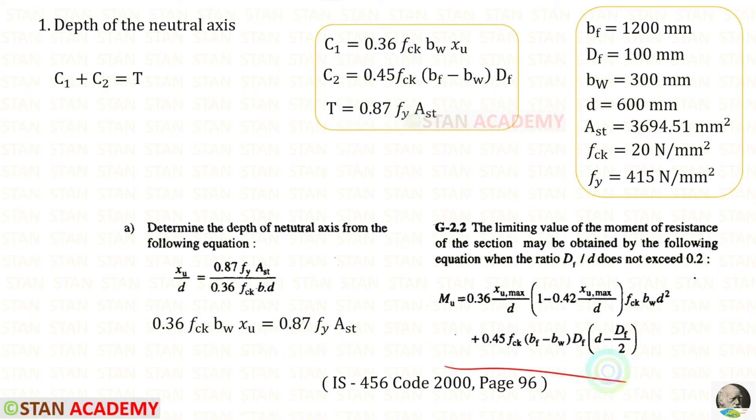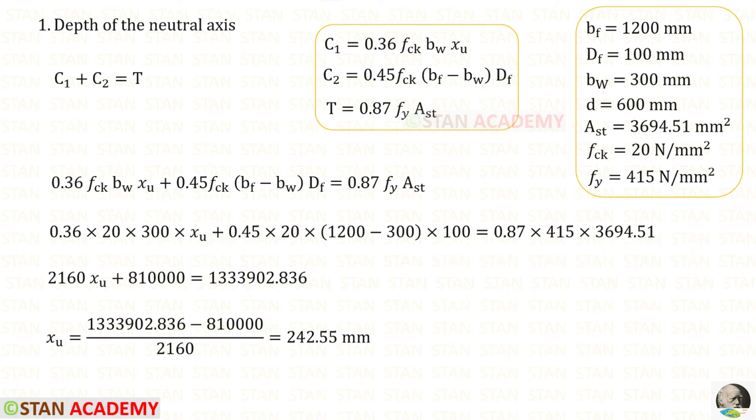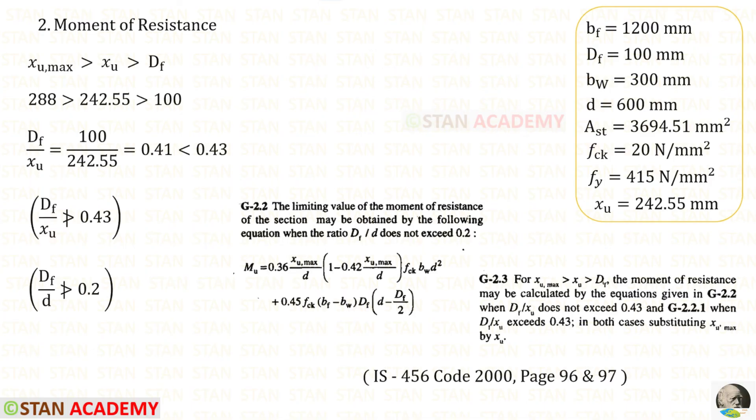From here we can get C2. We need to copy this into the equations. Let us apply all of the values. Finally, for xu we will get 242.55 mm. Now we can find df/xu - for that we will get 0.41.